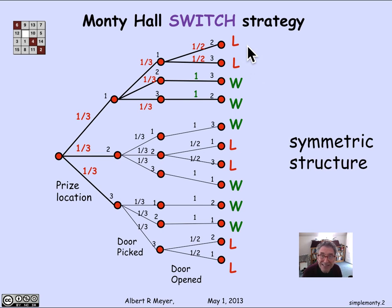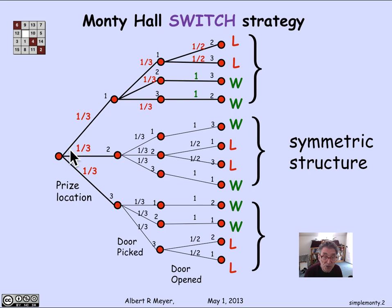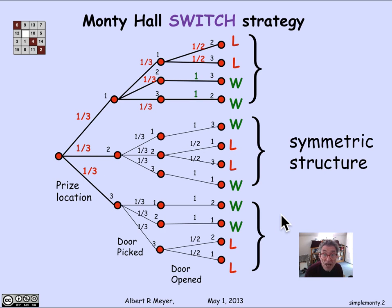It's clear that this tree has a symmetric structure. That is, these three subtrees — whether the prize is behind one, the prize is behind two, or the prize is behind three — all have the same structure. And we could have gotten away with analyzing one and deduced that that's what happened with the other two branches.